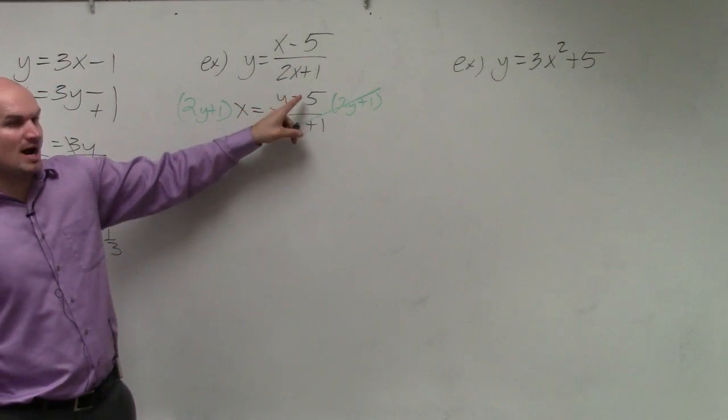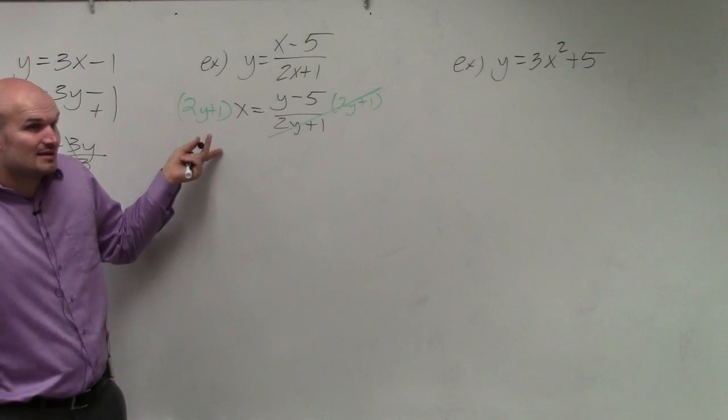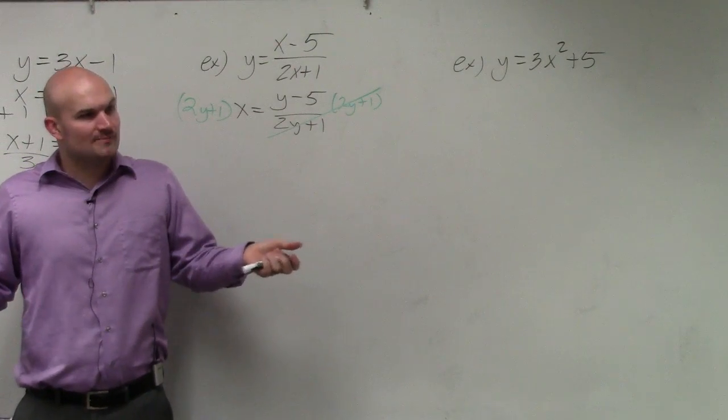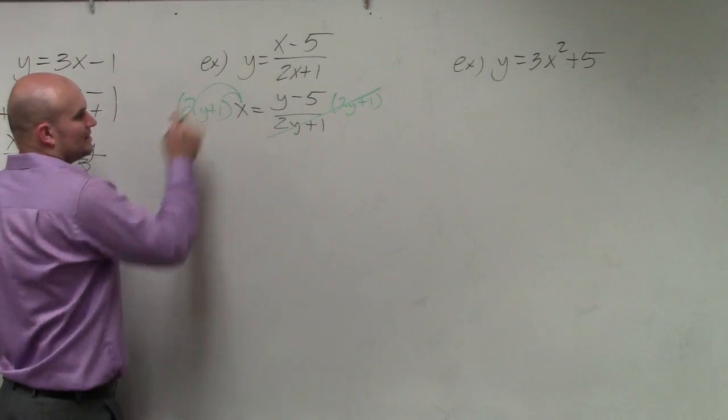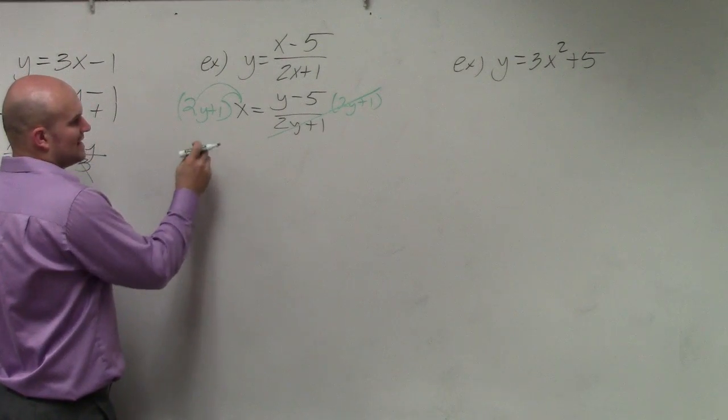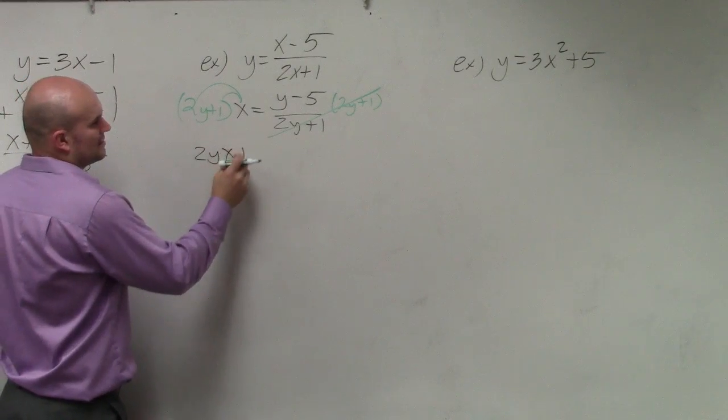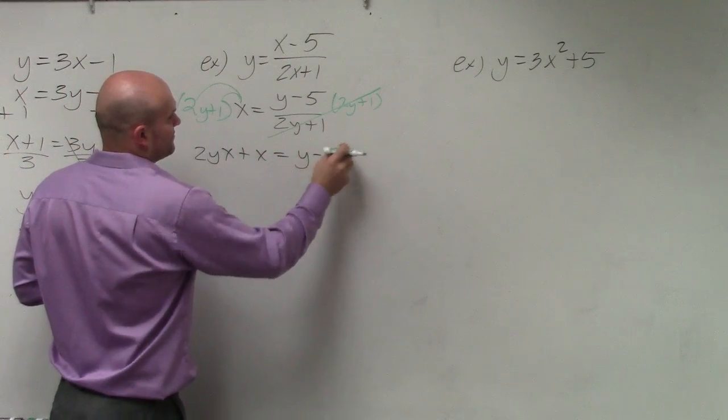Then over here, we have a y on the right side and we have a y on the left side. Well, we can't solve for y when it's on both sides, right? So therefore, what I'm going to do is apply the distributive property here on the left side. So now I obtain 2yx plus x equals y minus 5.